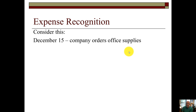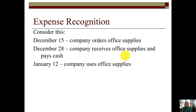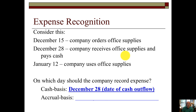Consider this fact: December 15th, the company orders the supplies. December 28th, the company receives the office supplies and pays cash. And on January 12th, the company uses the office supplies. So again, we have to differentiate between cash basis — when do we actually pay for them? That's when the expense would be recognized under cash basis. And then for accrual basis, we only recognize expenses when they are incurred, when they are used up or consumed — past tense verbs: used, consumed, expired. So on which day would the company record the expenses under cash basis? December 28th, that's when they paid for them. And then the accrual basis, it's when they are used — so that has to be January 12th, the date the benefit is received.